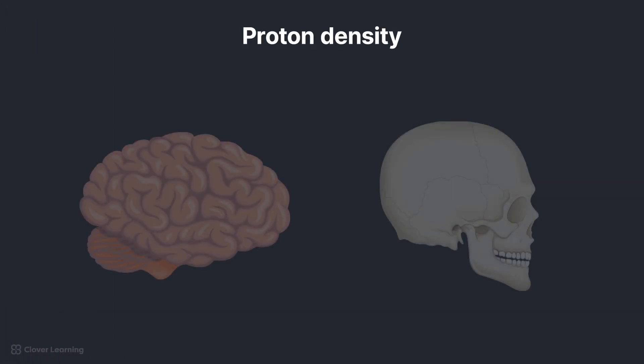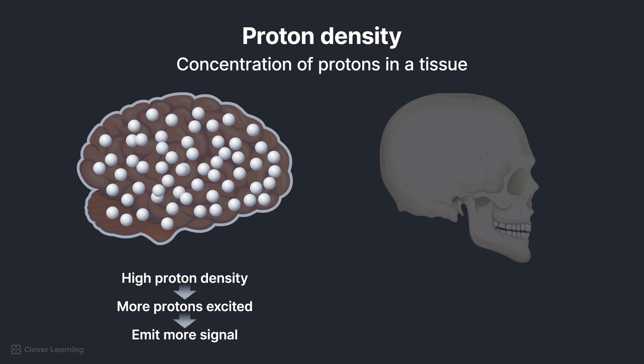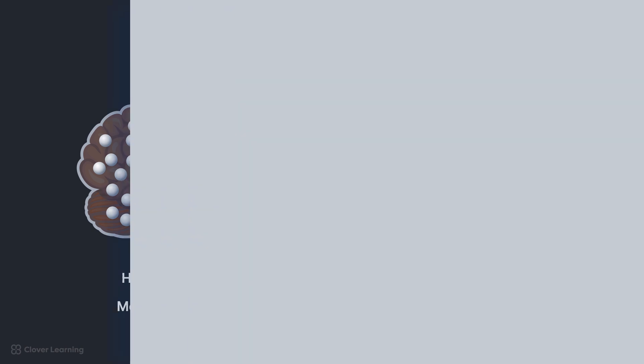Proton density refers to the concentration of hydrogen protons in a tissue. Tissues with high proton density, such as gray matter in the brain, emit more signal because more protons are available to be excited by the radiofrequency pulse, influencing overall image contrast. Bone, on the other hand, has lower proton density because there is minimal water in bone, so there are fewer available hydrogen nuclei to be excited by the radiofrequency pulse.